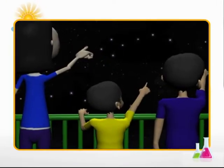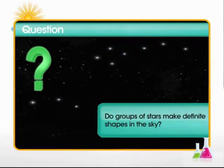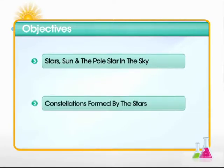Stargazing is an enjoyable experience. Not only can we spend hours admiring at the sheer number of stars shining back at us in the sky, but also wonder what shapes they form in the sky. Do stars really make any definite shapes in the sky? If yes, do these shapes have names? Let's explore the starry world from a little closer in this module on Stars and Constellations, where we learn about stars, sun and the pole star in the sky, and water constellations.